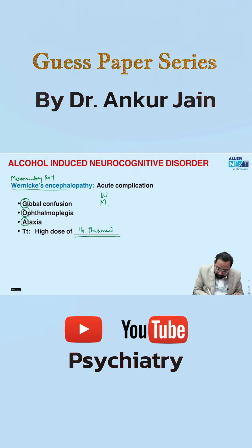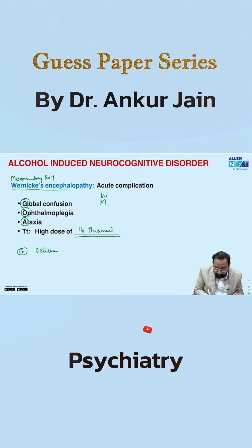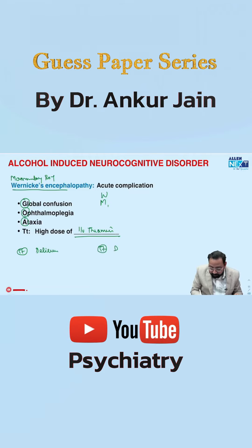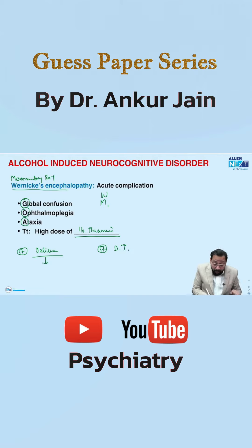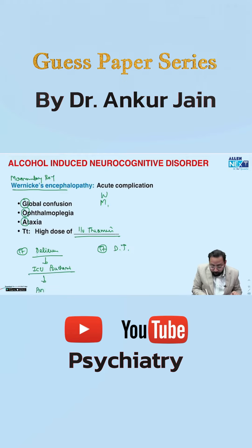Here we will discuss the treatment of delirium and treatment of delirium tremens. Delirium — another name is ICU psychosis. The treatment for delirium would be low dose antipsychotic.